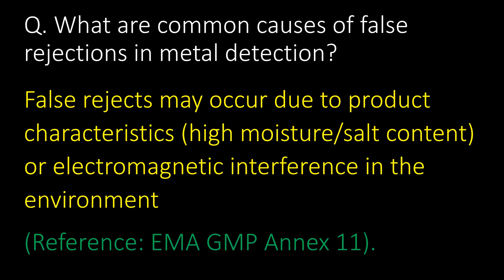What are the common causes of false rejections in metal detection? False rejects may occur due to product characteristics such as high moisture content, high salt content, or electromagnetic interference in the environment. Reference: EMA GMP Annex 11.